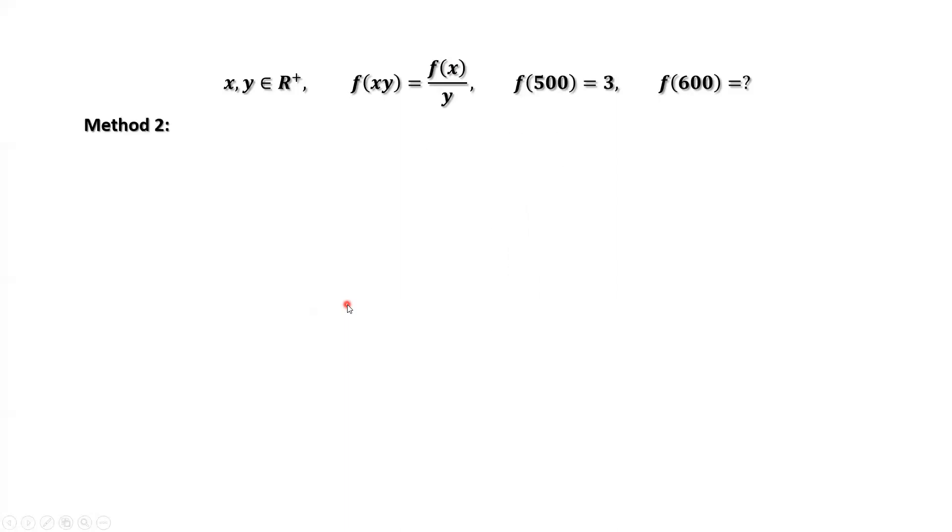In general, we may do this way. To find f of x first, then replace x by 600 to find the value of f of 600. x equals 500 times x over 500. Why are we doing this? We are going to use this formula and this result. Now we consider 500 as the x. y is x over 500. We can apply this formula.